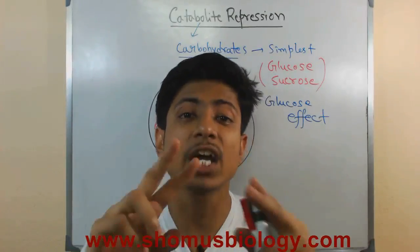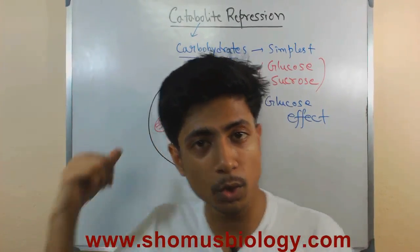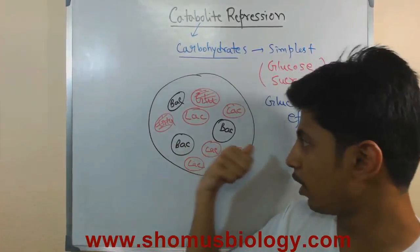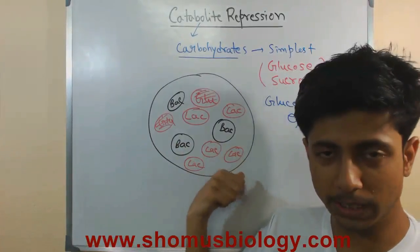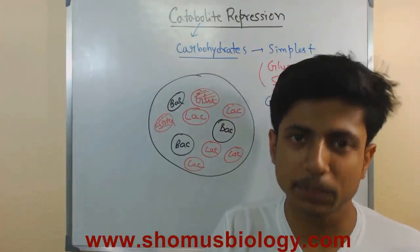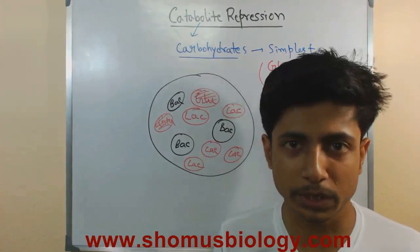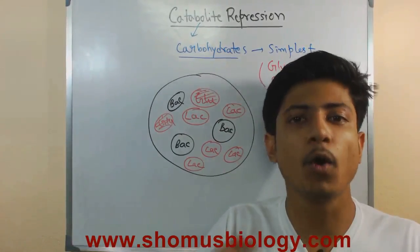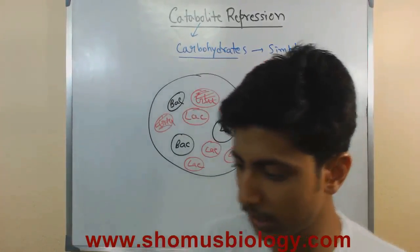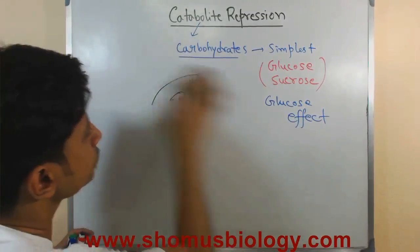The answer to why this happens is a combination of both glucose and bacterial genetics. Glucose represses the uptake of lactose, and the bacterial operon system has something to do with it as well. That is the exact process of catabolite repression we will now examine.